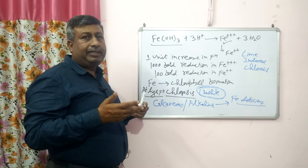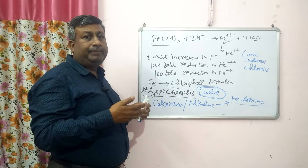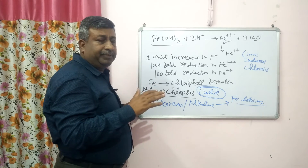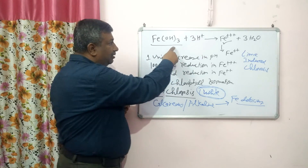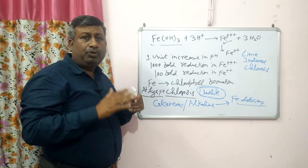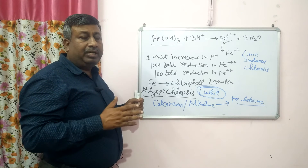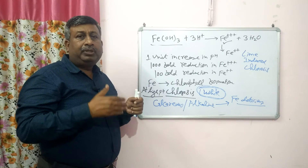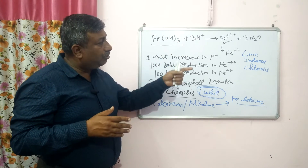If we have iron deficiency, how can we reclaim it? We need to use an acid-forming substance, organic acids, or organic matter that will create acidity. We also use chelates, which increase iron availability. Under acidic conditions, hydrogen ions react with ferric hydroxide, releasing iron and converting it to ferrous. Iron is available under low pH (less than 7) and iron deficiency is common when pH is more than 7, particularly in calcareous soils or where irrigation water has high bicarbonate content. Bicarbonate and carbonate induce iron deficiency, known as lime-induced chlorosis.